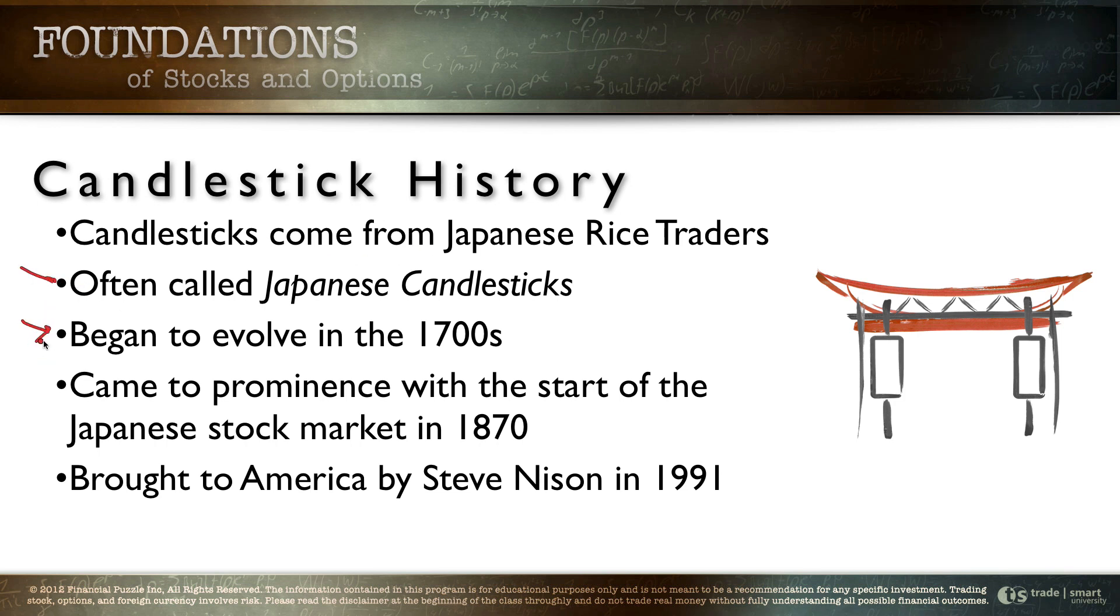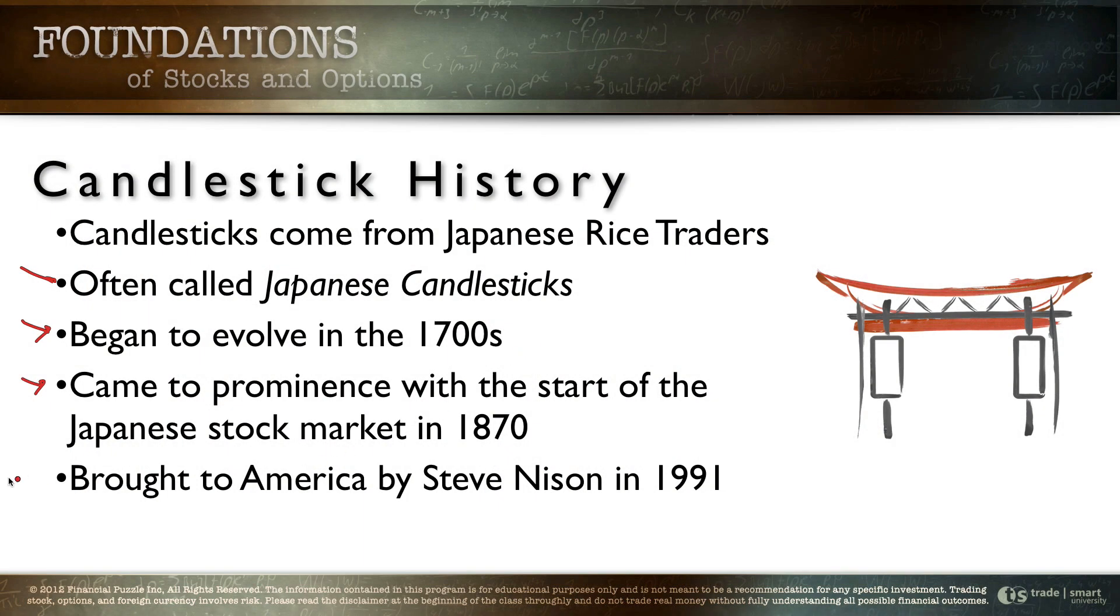They did begin to evolve in the 1700s as we just talked about but by 1870 when the Japanese stock market was established candlesticks were completely commonplace. So somewhere between the 1700s and the 1800s they went from being innovated and starting to be used to where it was the standard, everything was built around candlestick trading. Eventually they were brought to America by a guy named Steve Nissen and that happened in the year 1991 when he wrote his first book on the subject called Japanese Candlestick Charting. It's a very good book and if you ever get a chance to look at it I certainly would encourage you all to read it.